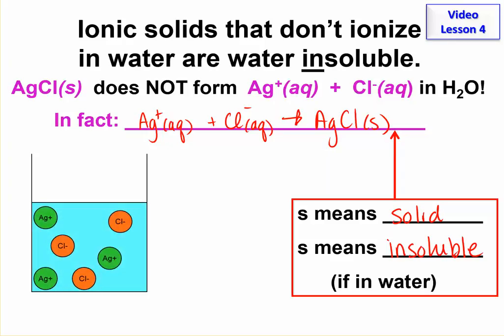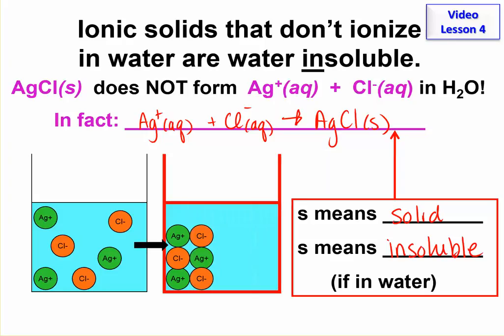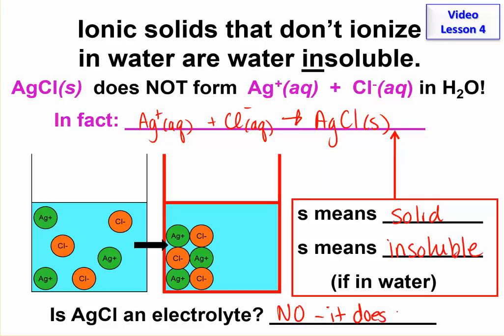Here's how this looks. Here are the ions put into solution. Again, we have to use some other compounds to get them in solution, but they are there. They will find each other and form that solid. This you will see. It will be a crystal sitting on the bottom or maybe small crystals all floating throughout that make it look cloudy. So is silver chloride an electrolyte? No. It does not ionize.